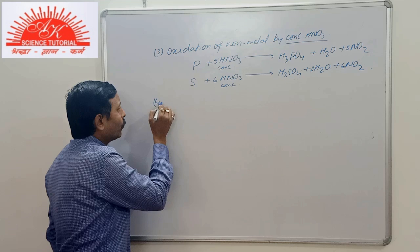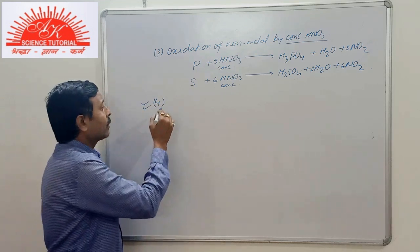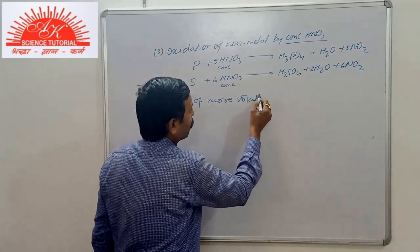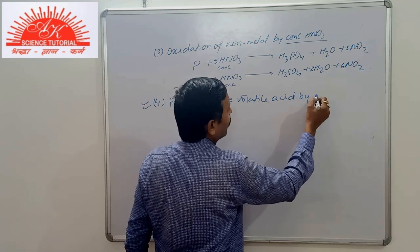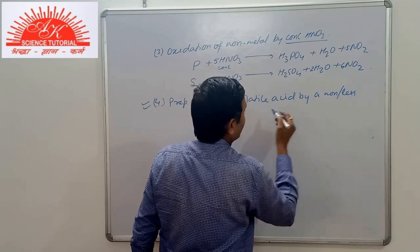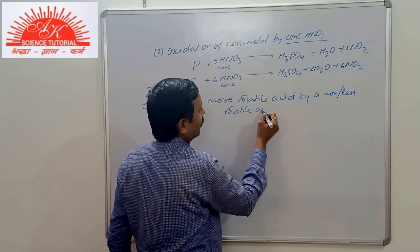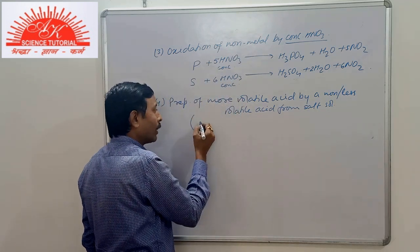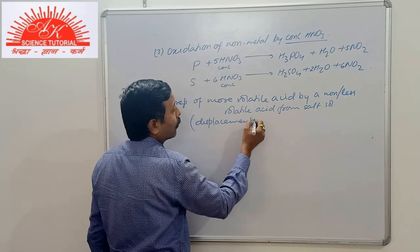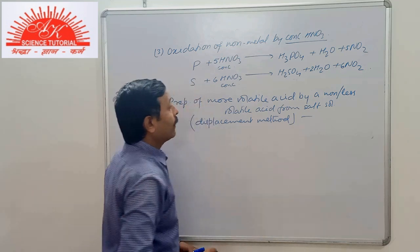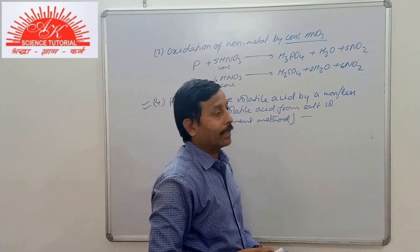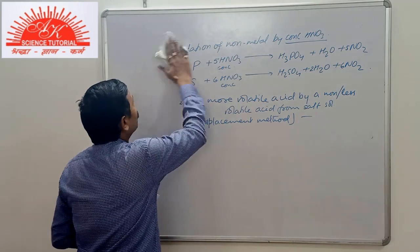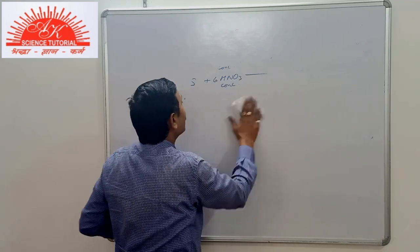There is another method, which is also an important method of preparation, that is preparation of more volatile acid by a non or less volatile acid from salt solution. It is also given in book as displacement method. That is, in this part you see that a less volatile acid or a non-volatile acid displaces more volatile acid from its salt solution. Volatile means which will have low boiling point and it will easily come out in the form of vapor.